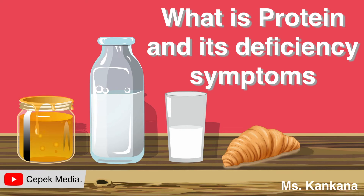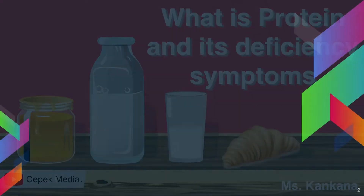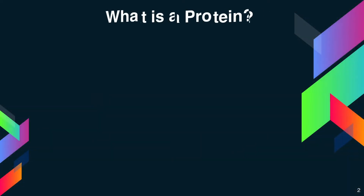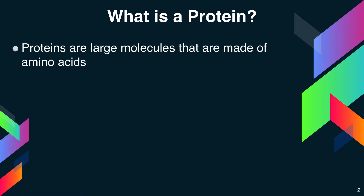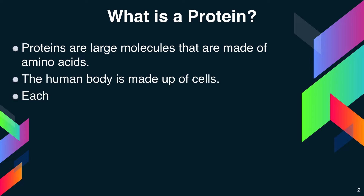What is a protein and its deficiency symptoms? Proteins are large molecules that are made up of amino acids — around 20 amino acids. The human body is built upon cells, and each cell has thousands of proteins.